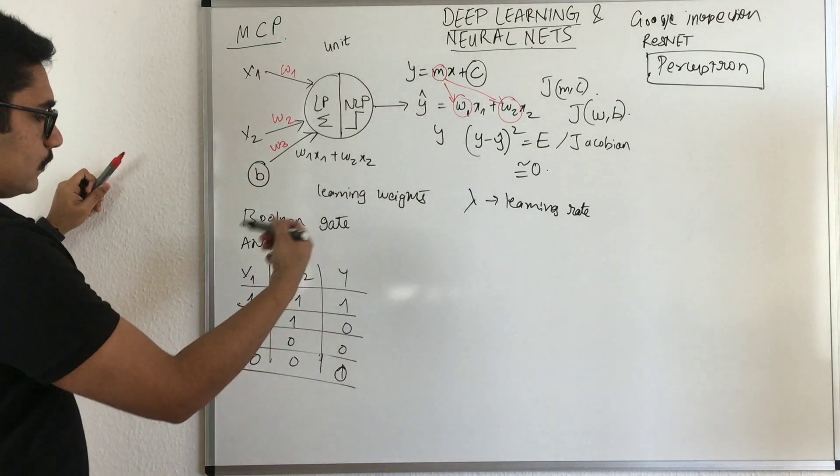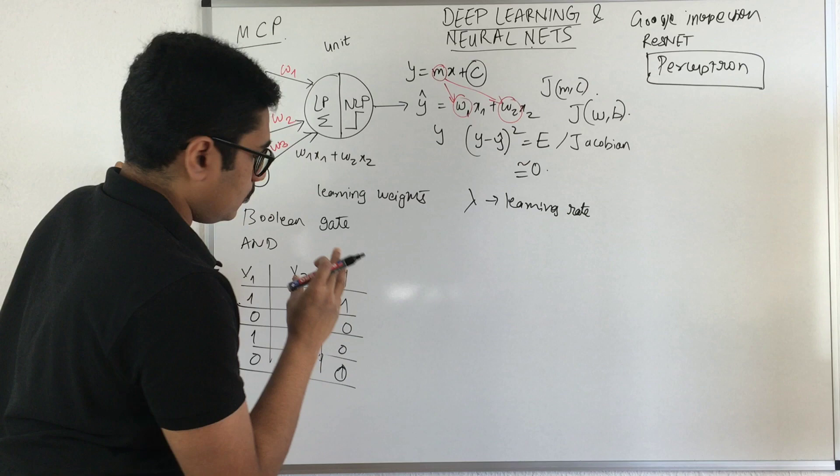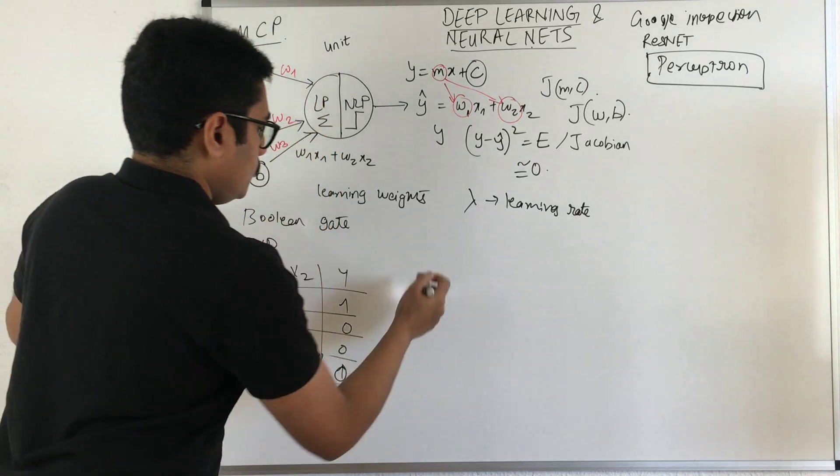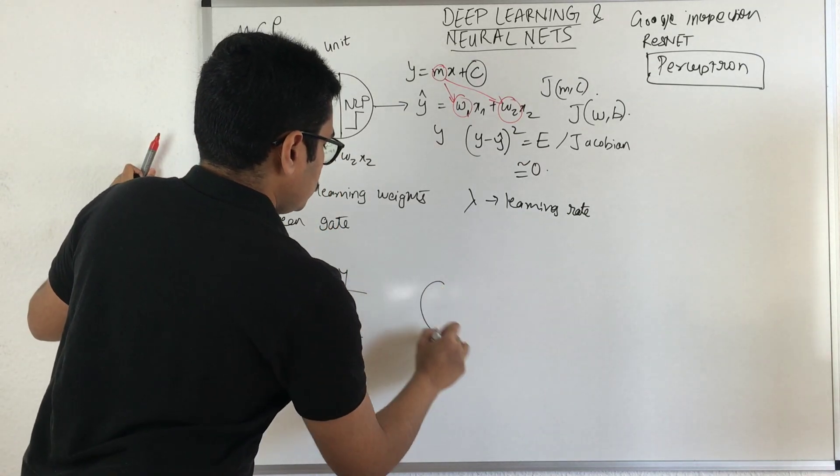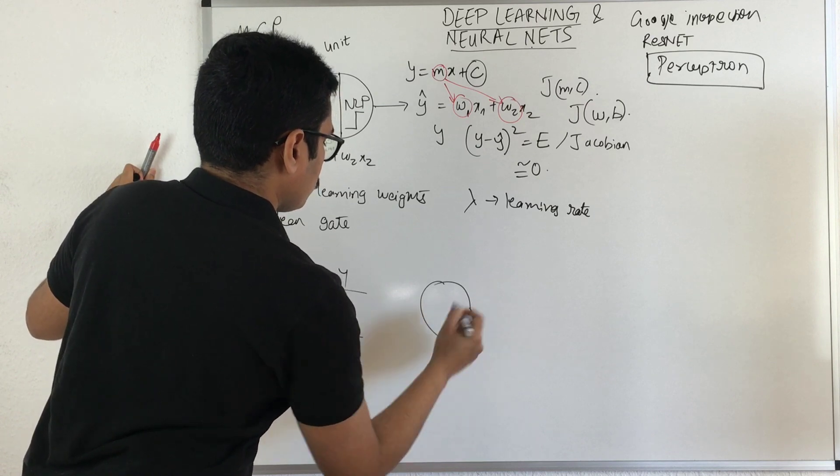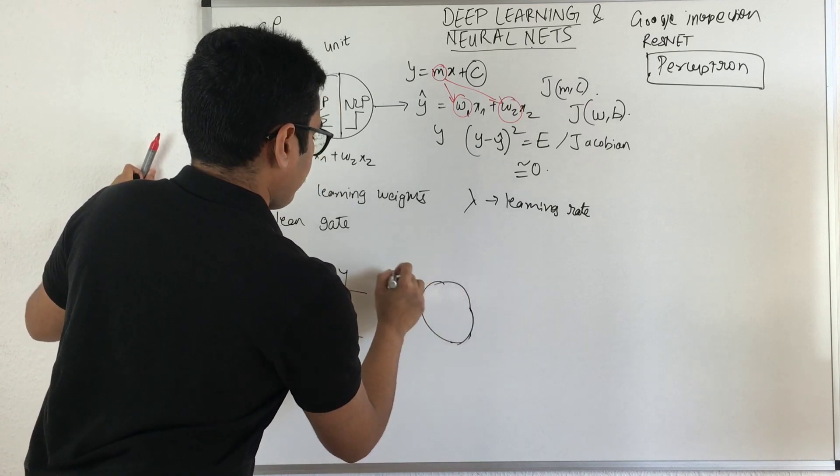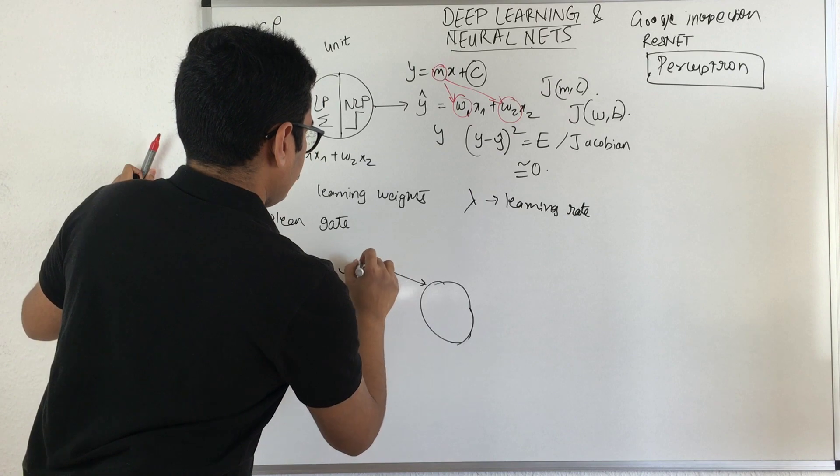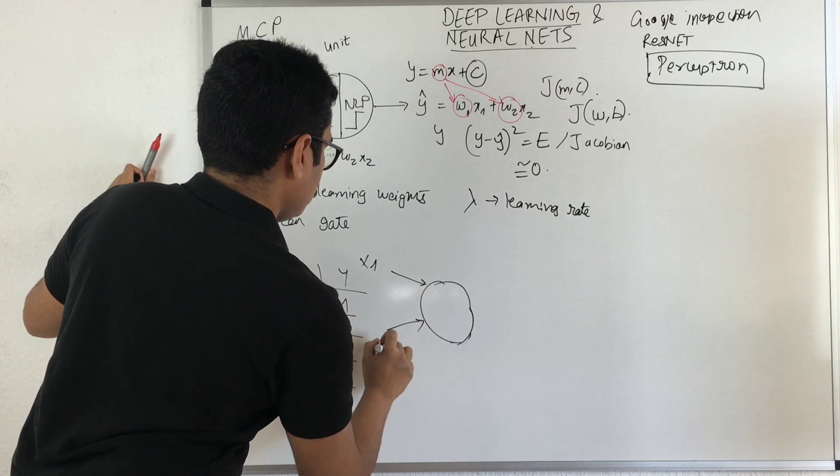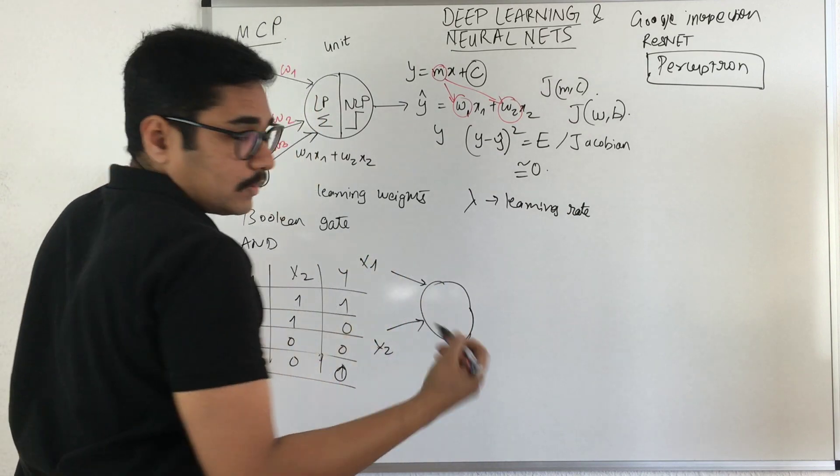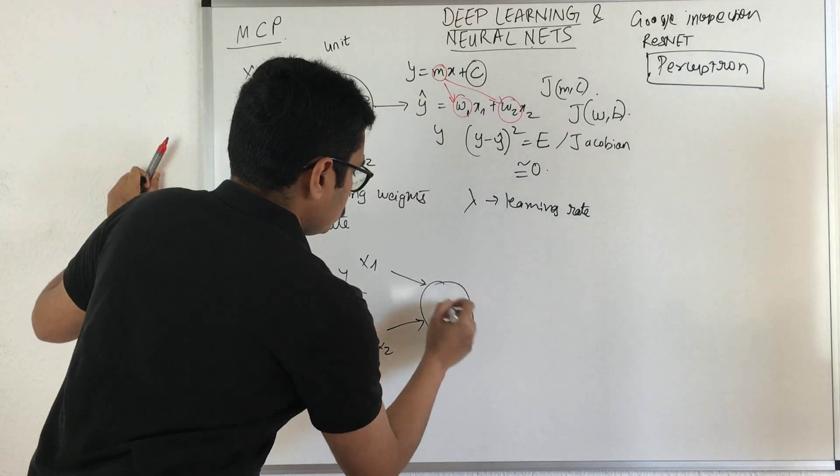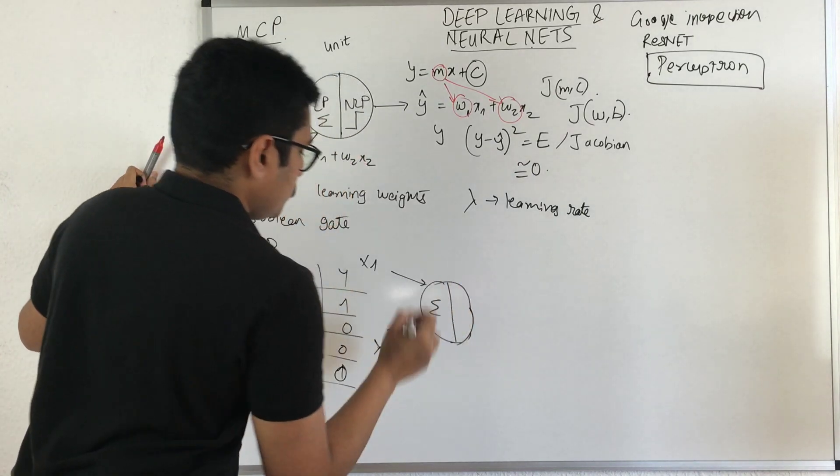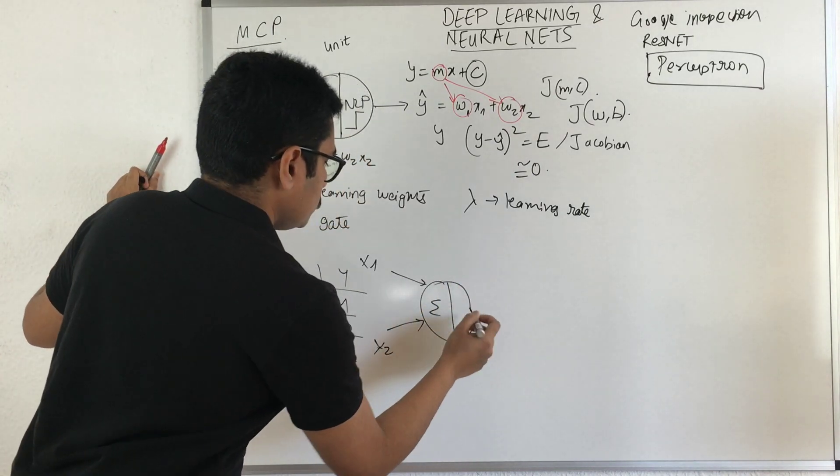When we have both 1 you get 1, 0 and 1 you get 0, 1 and 0 you get 0, and 0 and 0 you get 0. If we want to mimic this Boolean activity in terms of neural networks, we draw one neuron or unit.